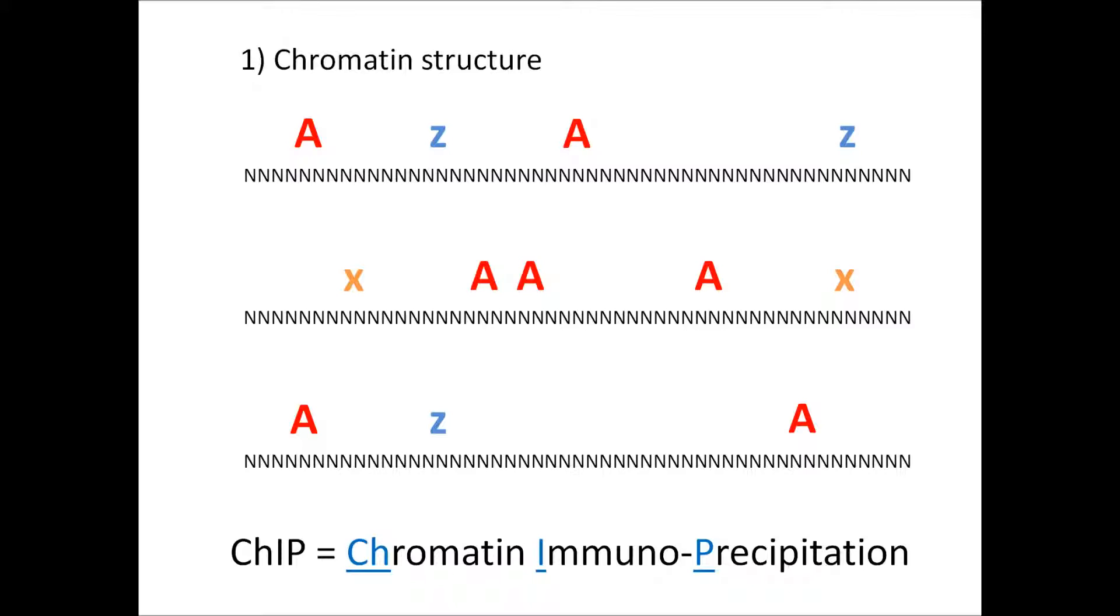I'm going to briefly go over the different steps of the chromatin IP procedure. As a bioinformatician or somebody doing the analysis, this may not be immediately relevant, but there are lots of points where things can go wrong here. And if you have a poor immunoprecipitation, you're never going to get any decent data.